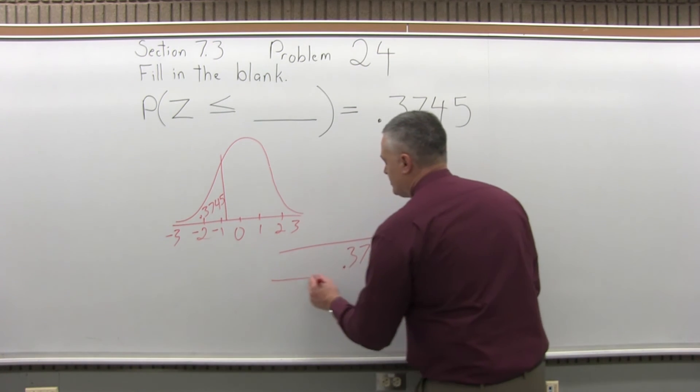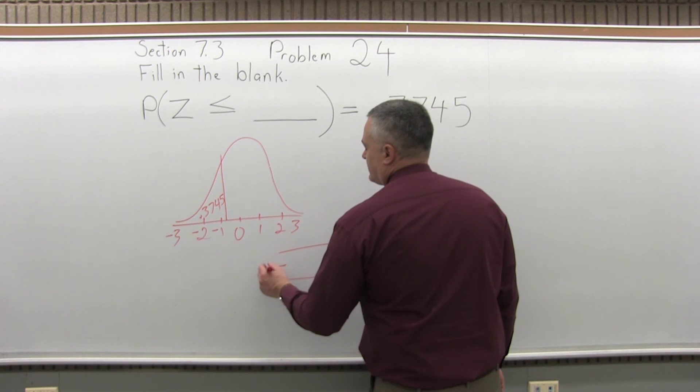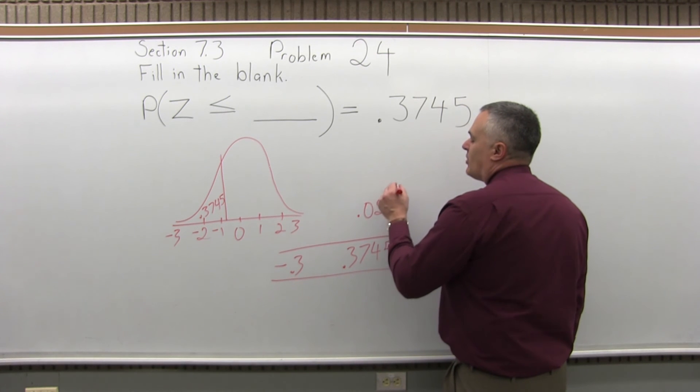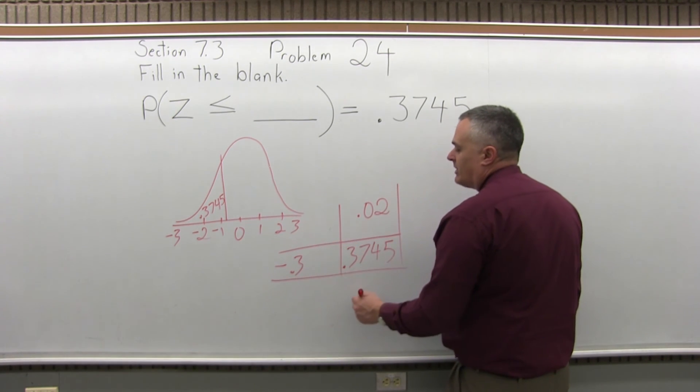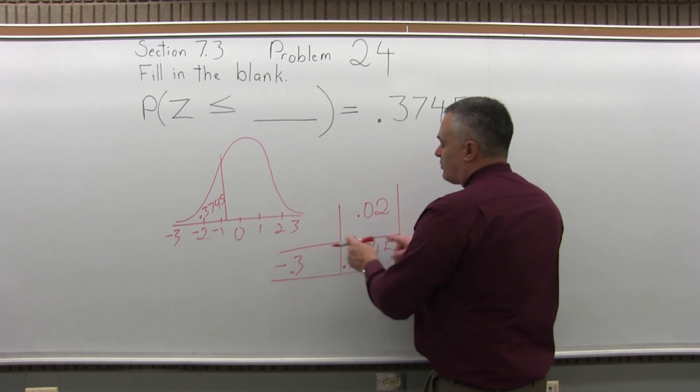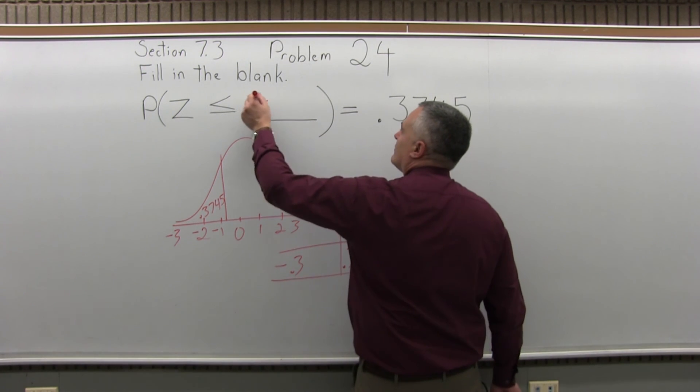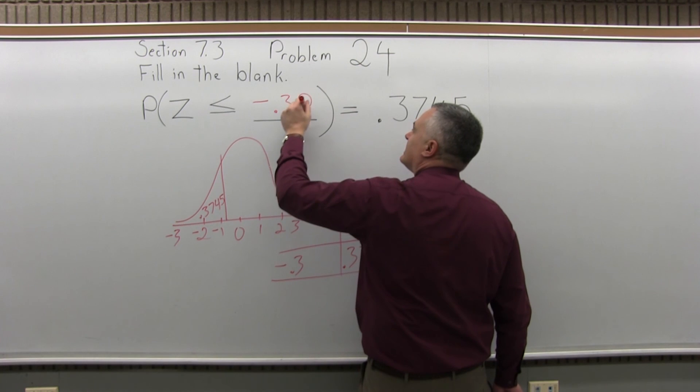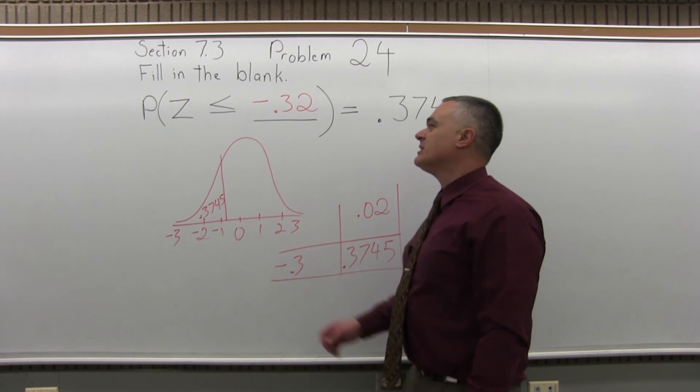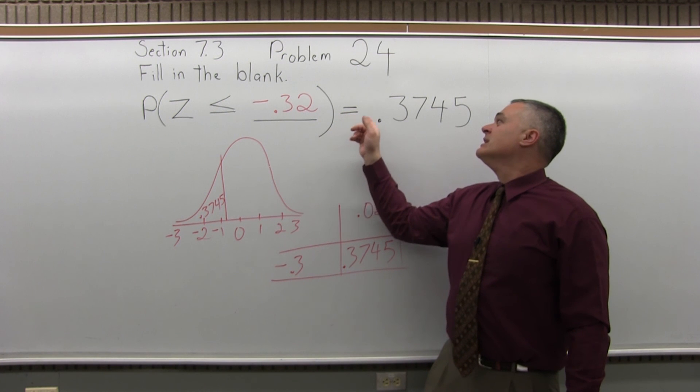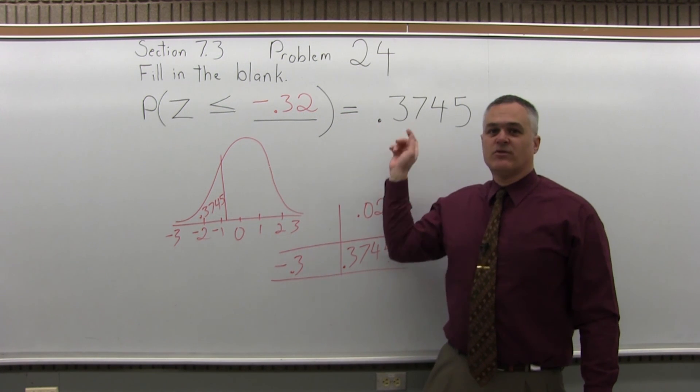Once you do, you'll notice that it's in the negative .3 row and in the .02 column. So the value that you must have looked up to have that .3745 is negative .32. That's what fills in the blanks. So the probability that Z is less than or equal to negative .32 is equal to .3745.